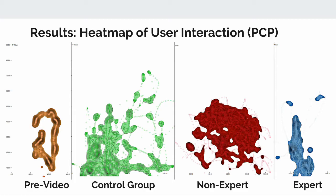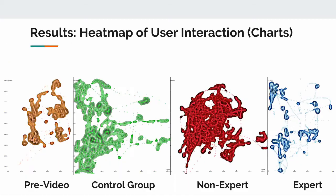where the x-axis is the mouse x value and the y-axis is the y value. Here you can clearly see that the expert heat map corresponds with the pre-play video heat map, whereas the non-expert or control group were more sporadic. The same goes for this heat map of the chart data.